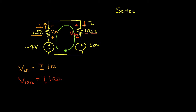Knowing the voltages now across the resistors, the thing that I don't know in each case is I, but we'll solve for that in just a minute. I can now apply Kirchhoff's voltage law around the loop. Let's start right here with the 48 volt source. We're going from negative to positive, so applying Kirchhoff's voltage law I have negative 48 volts. Then in the 1 ohm resistor, going from positive to negative, plus V 1 ohm, plus V 10 ohms, plus 30 volts — going from positive to negative through that source — is equal to zero.